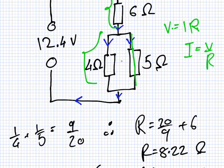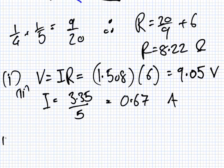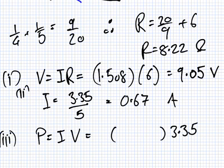So the next one is to calculate the power in the 4 ohm resistor. So, what's the formula for power? P equals IV. Now, do I know the V? I do. What is it? 3.35, wasn't it? Do I know the I? Well, I just talked about a quick way to get the I. What was it? 1.508 minus 0.67. 0.83.